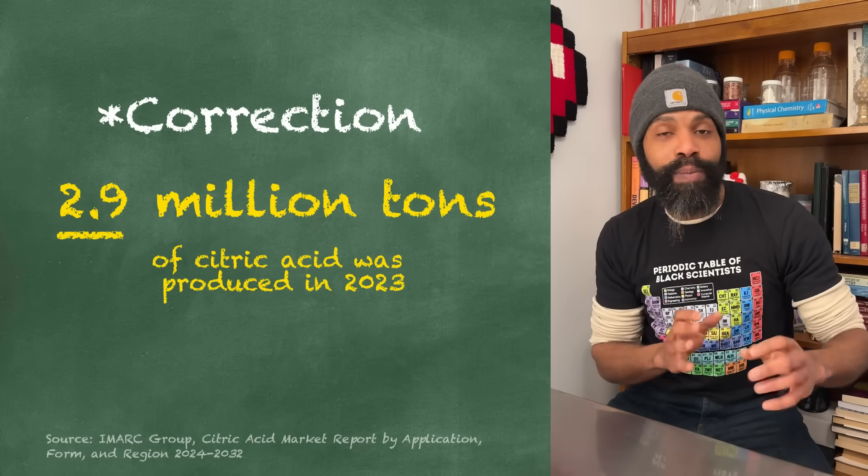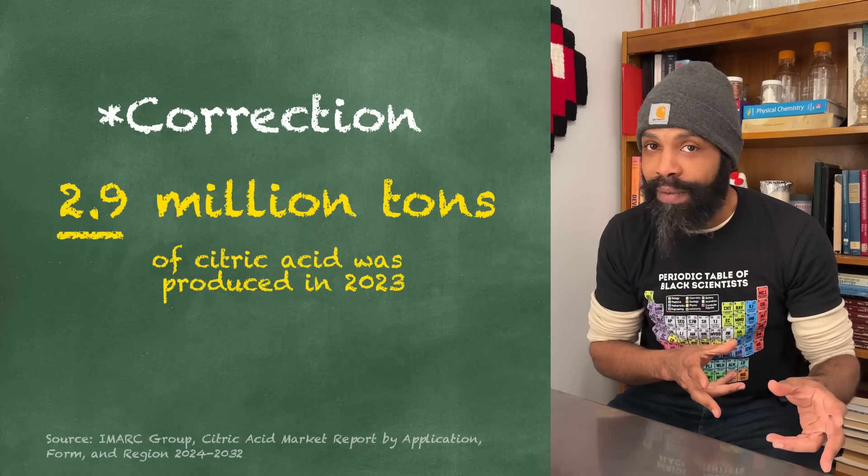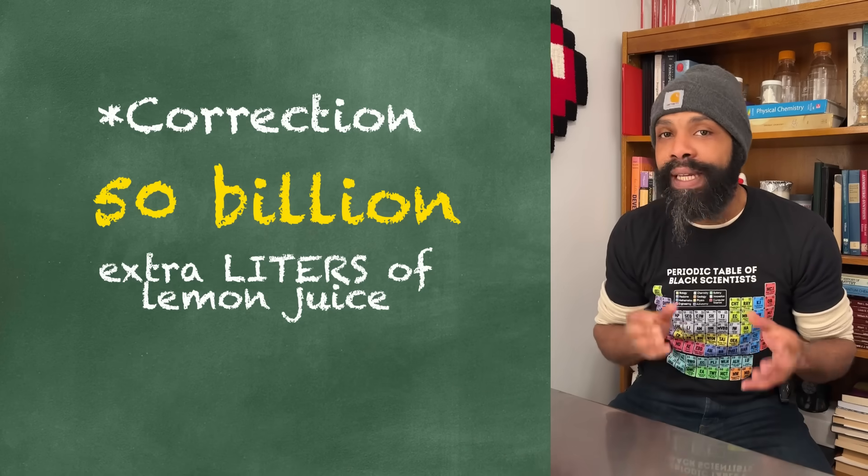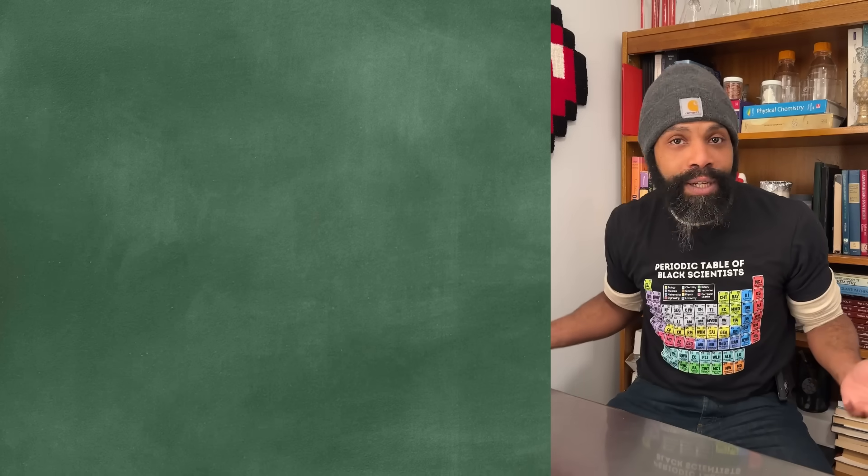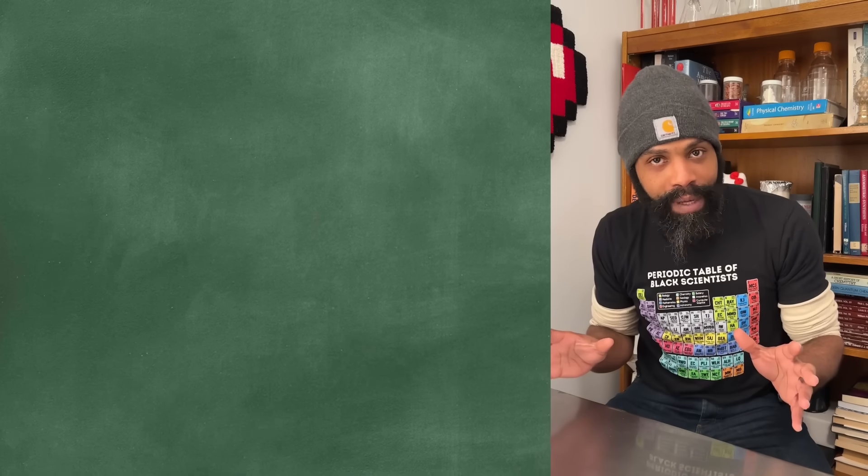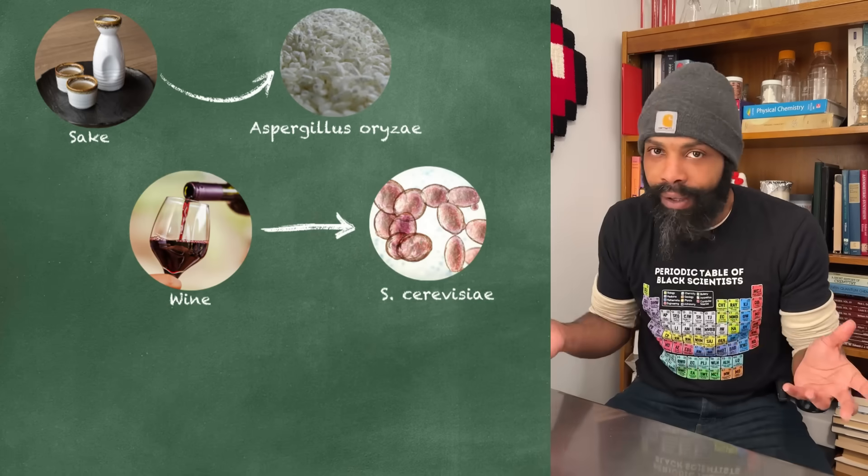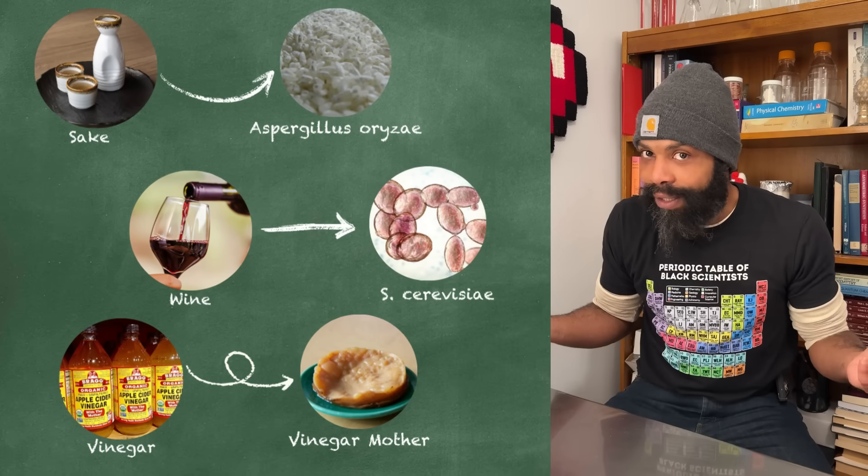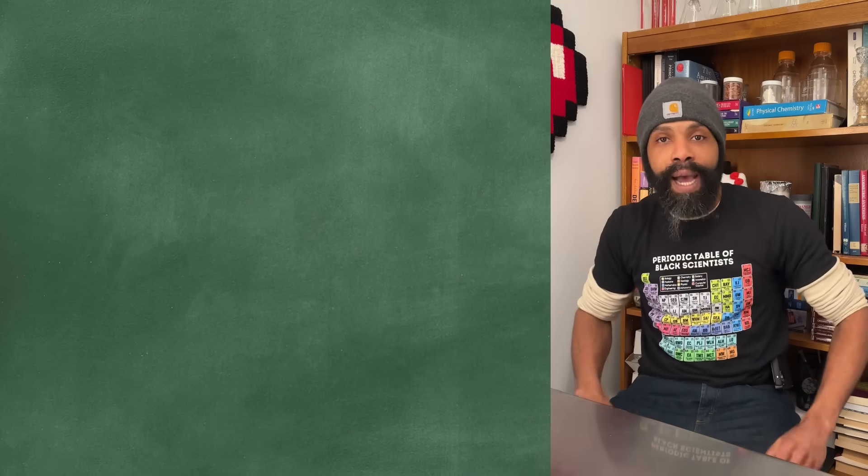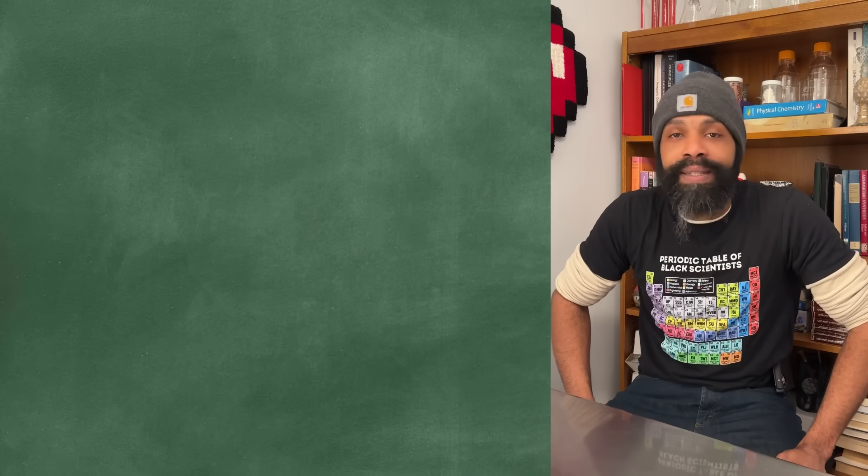If we wanted to cover the 2.7 million tons of it we made in 2023, we would need 50 billion extra lemons. That's part of why for the last 100 years or so we've been making it from mold, the same way we make alcohol and acetic acid vinegar from a fungus. But first I want to talk about how it was initially discovered, because that to me is kind of cool.